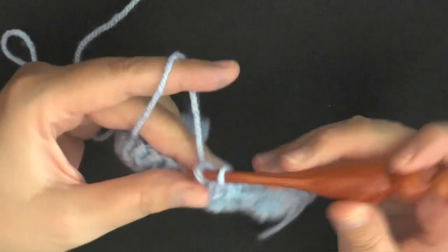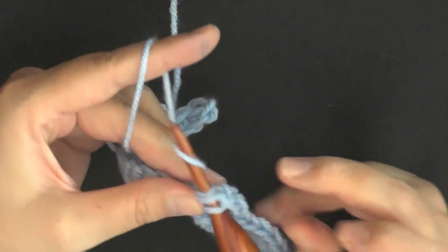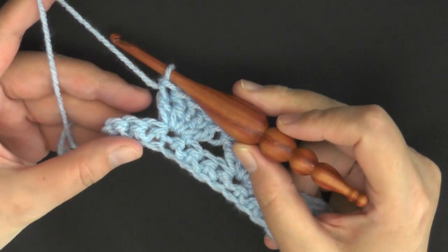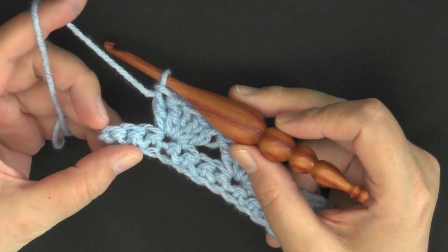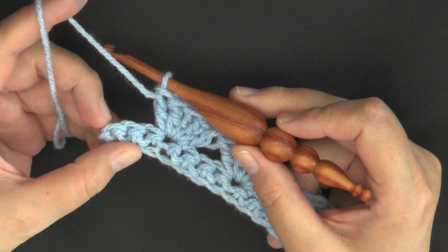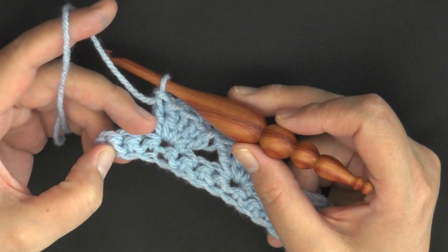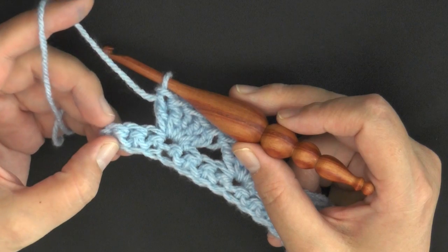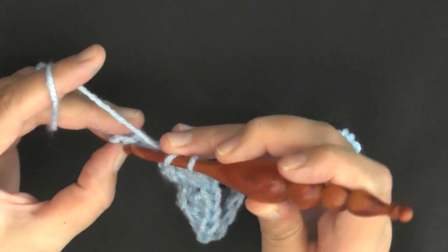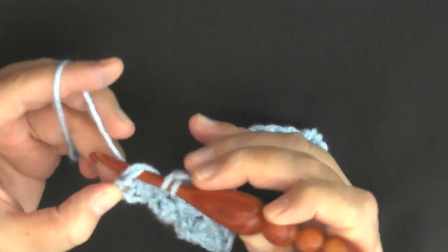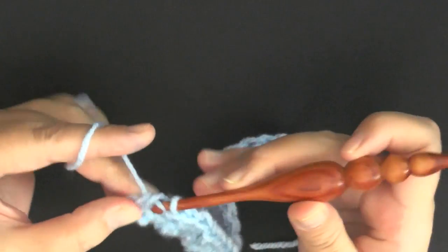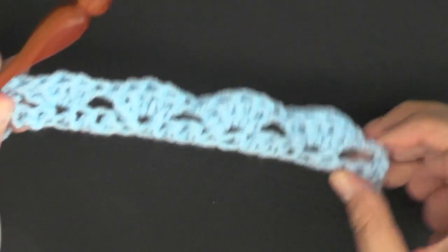So after your last shell of the row, you should have three stitches left on the end. You're going to skip two stitches, one, two, and then this very last stitch of the row you're going to want to put a double crochet, and that will end row two.